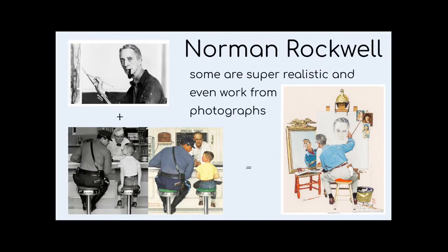This guy, Norman Rockwell, is a famous American artist who used to work from photographs to create real paintings. Here's a photograph on the left of a boy and a policeman sitting at a counter, and the way he painted it on the right. And then on the far right, we have a painting of himself painting himself. So he's kind of in there three times — he's in the mirror, he's in the chair, and then he's painting himself painting himself.